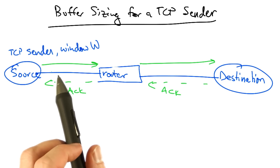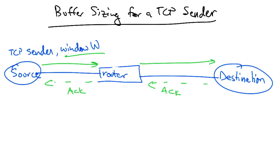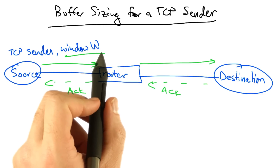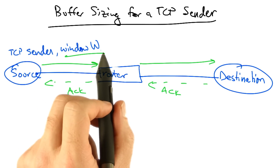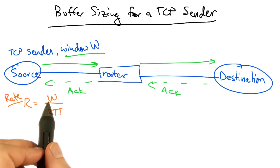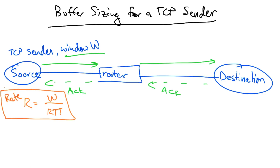Let's suppose that we have a TCP sender that's sending packets, where the sending rate is controlled by the window W, and it's receiving ACKs. Now at any time, if the window is W, only W unacknowledged packets may be outstanding. So the sender's sending rate R is simply the TCP window W divided by the round trip time of the path. So the rate is W over RTT.